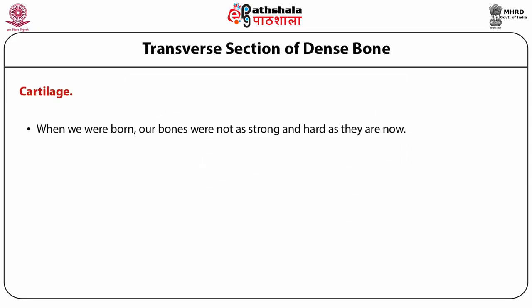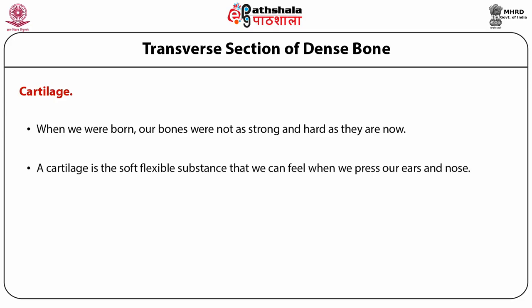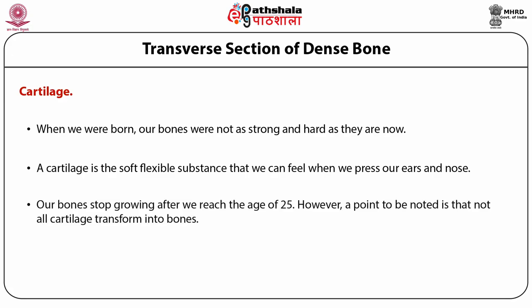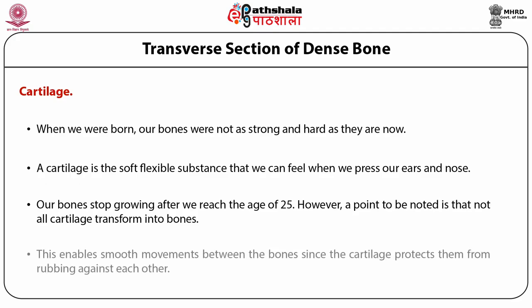When we were born our bones were not as strong and hard as they are now. This is because when we were babies our bones were mostly made of cartilage — the soft flexible substance that we can feel when we press our ears and nose. As we grow, the cartilage slowly transforms into dense and hard bones. Our bones stop growing after we reach the age of 25 years. Not all cartilage transforms into bone — apart from the ears and nose, cartilage can be found in the joints of the bones, rib cage, bronchial tubes, and intervertebral discs. This enables smooth movement between the bones since the cartilage protects them from rubbing against each other.